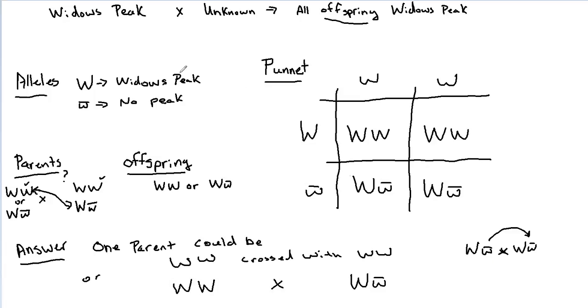That's how to solve a genetics problem: get your alleles, figure out your parents and offspring depending on what the question gives you, plug it into your Punnett square, and then get your answer.